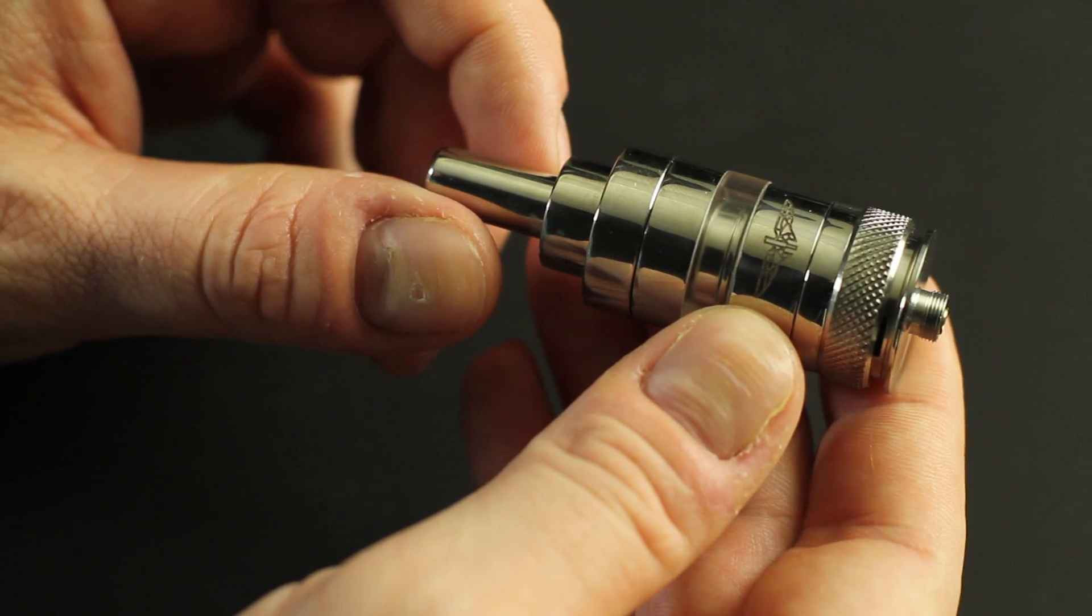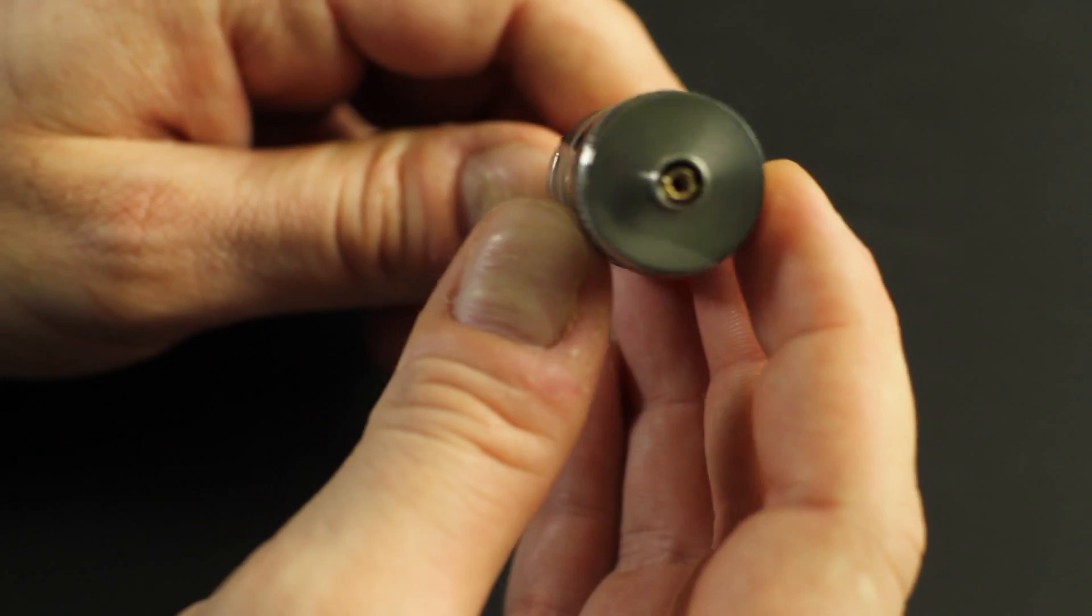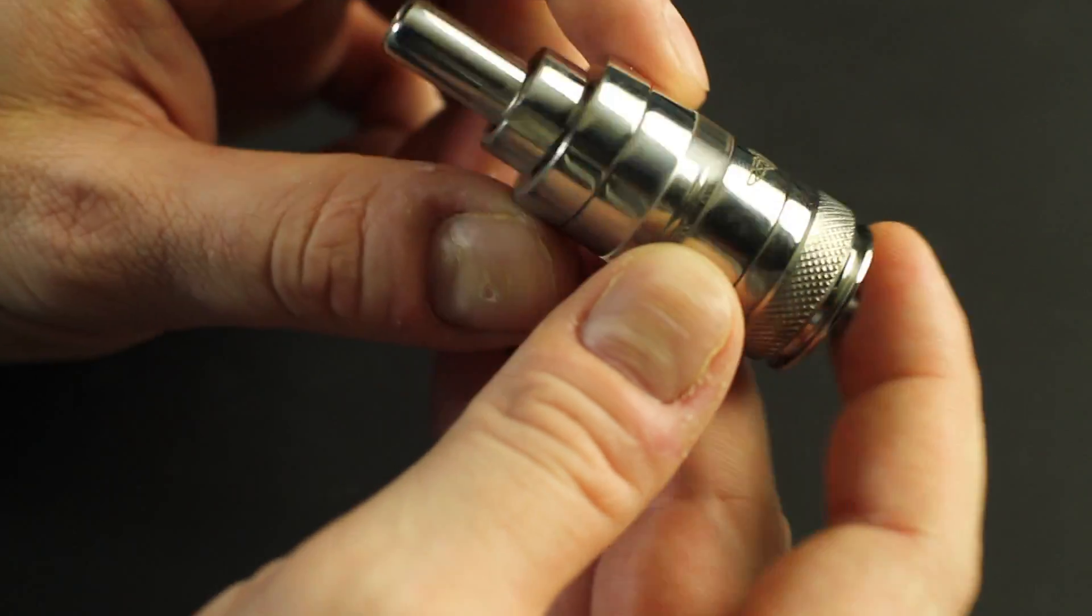After you check out the device, you want to inspect the atomizer. Just ensure that it's assembled properly and also take a glance at that contact and make sure it's free of juice and also doesn't have any corrosion or oxidation.